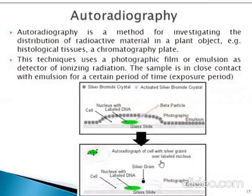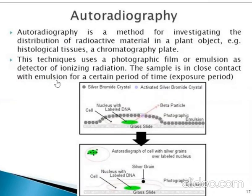Autoradiography is a method for investigating the distribution of radioactive material in a plant object through histological studies or chromatography plates. This technique uses a photographic film or emulsion as a detector of ionizing radiation, and the sample is placed in close contact with the emulsion for a certain exposure time period.